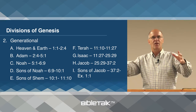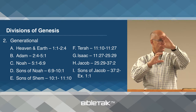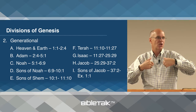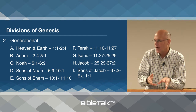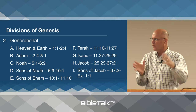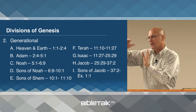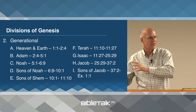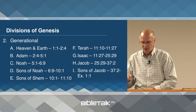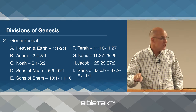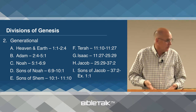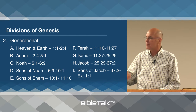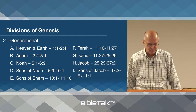The division into just two parts — creation and chosen people — is a human division; scholars look at it and say the first 11 chapters are about this and the other chapters about that. But the generational division is the natural division of Genesis. That's how it naturally breaks down.